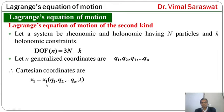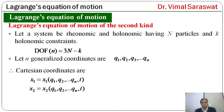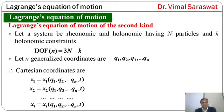x1 is a function of q and t. x2 is also a function of q1, q2, qn and t. Similarly, the i-th Cartesian coordinate xi is a function of q1, q2, qn and t.